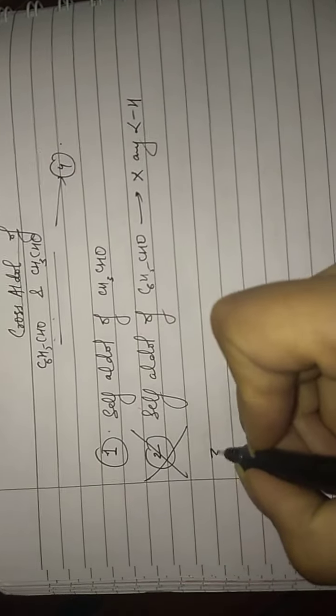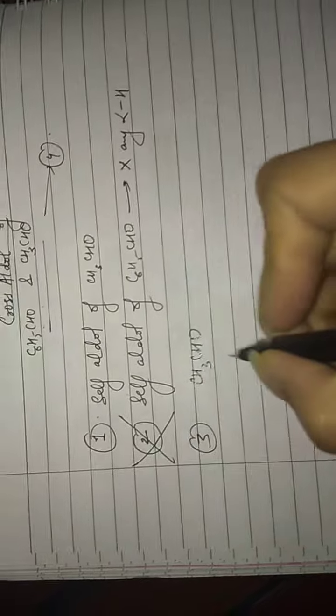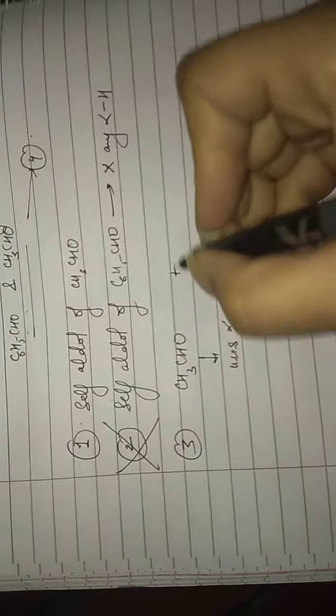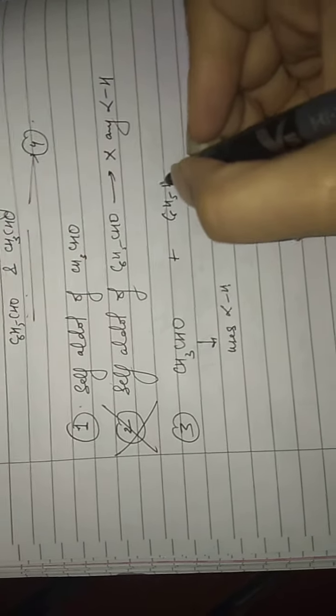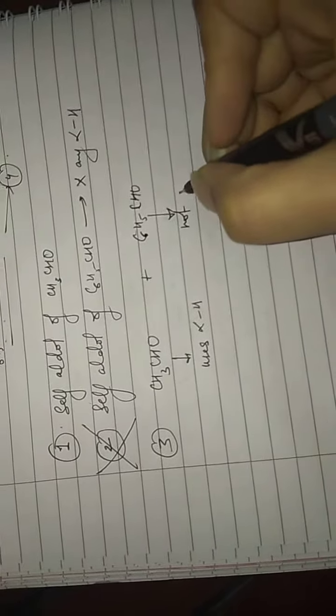Third product is formed when this uses alpha-H and this does not use alpha-H. This can be formed because this already does not have alpha-H.